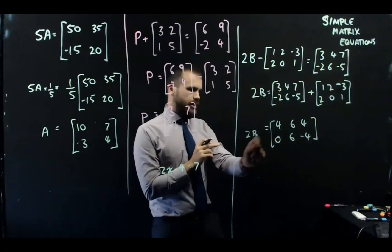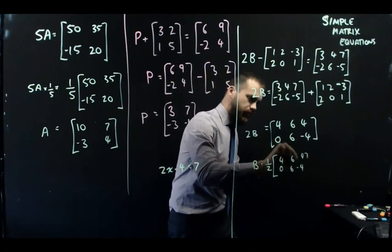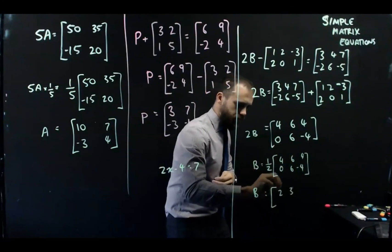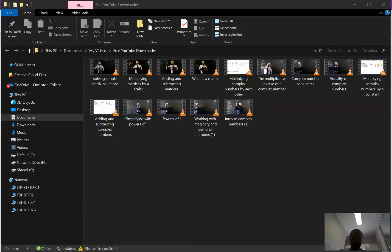And then we need to multiply both sides by a half, which is the same as dividing by 2, but we just don't divide matrices. We multiply them by fractions. All right. And that's solving simple matrix equations, one-step, two-step.